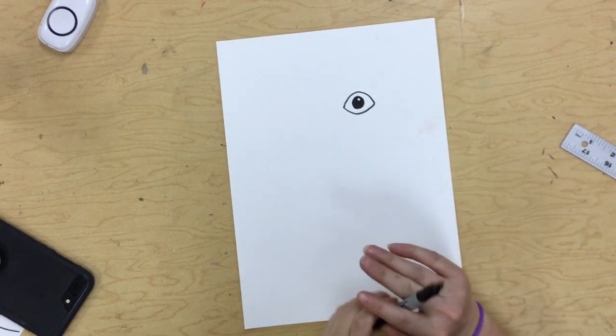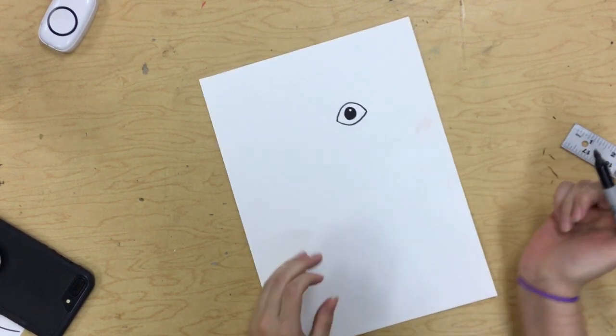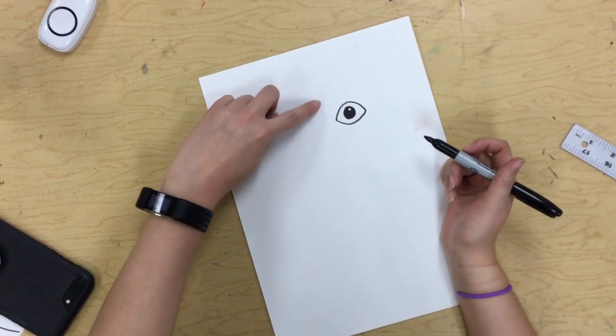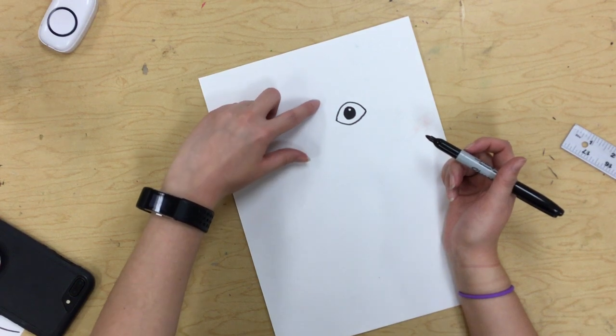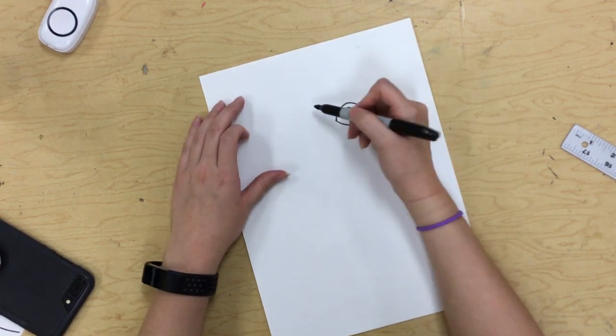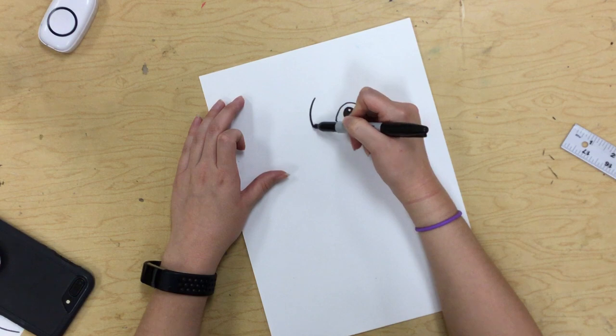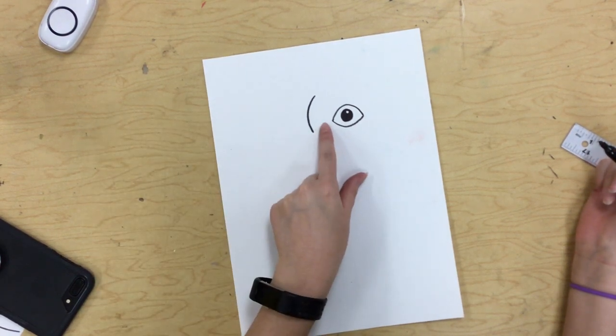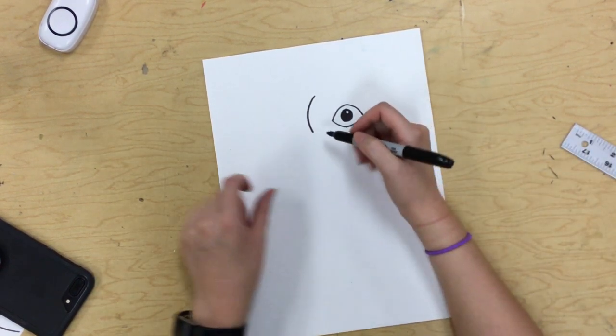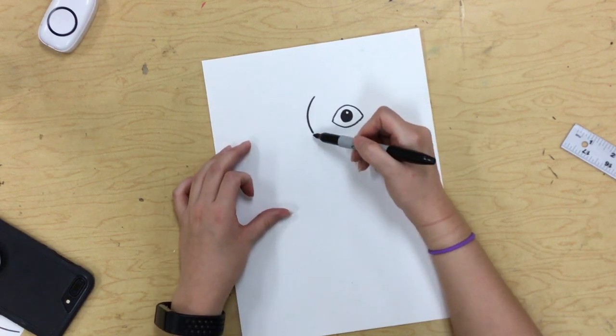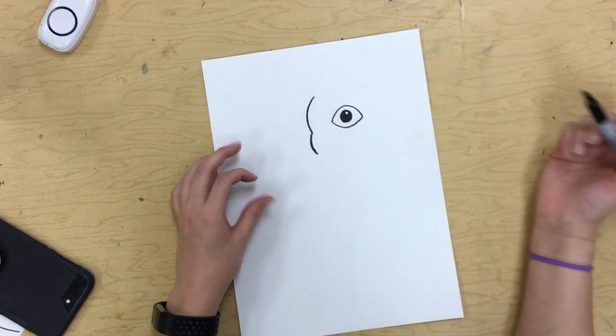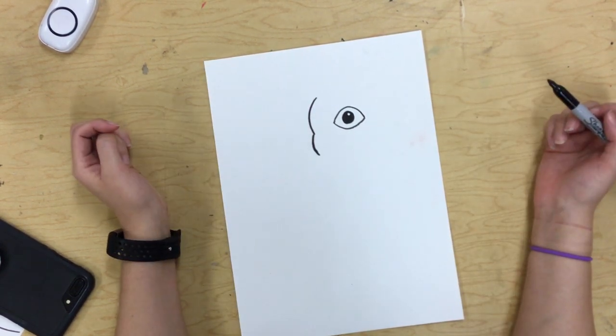Now we're going to start on his beak. So what you need is a curved line that comes in front of his face. I like to kind of draw it with my finger first so I kind of get an idea of exactly where I want it. Make sure you're leaving enough space between his eye and the curve. Then below that curve, I'm going to make another one that's a little bit shorter. And you can see I've kind of left a point in the middle, just a little bit.